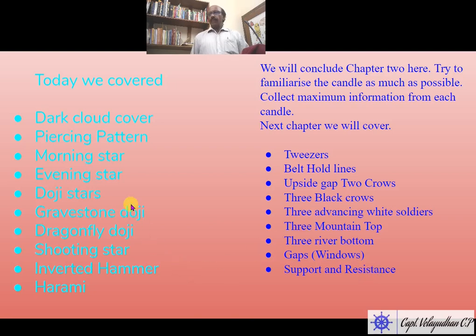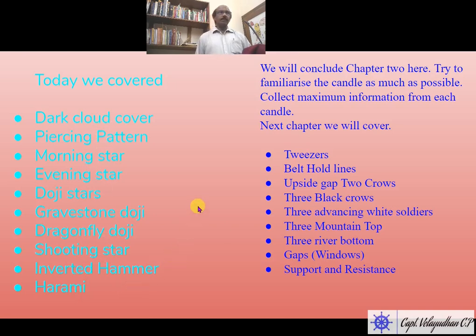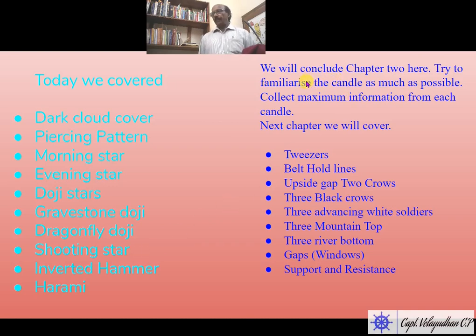Let us see what we have covered today. We covered dark cloud cover, piercing pattern, morning star, evening star, doji stars, gravestone doji, dragonfly doji, shooting star, inverted hammer, and harami. These are all very important reversal candles. All these candles will work as support and resistance. So it is very important to know all these candles. Here we will conclude today's lesson, Chapter 2.